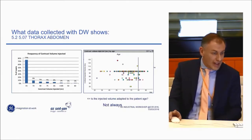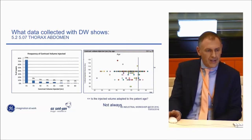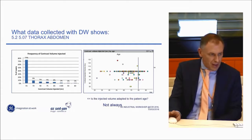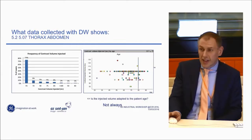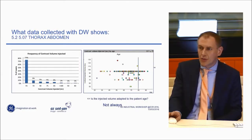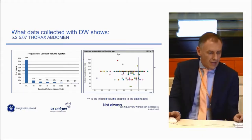Is the injected volume adapted to age? Definitely not always. Looking at the age line at 80 years, above that threshold we see that some patients receive 75 or 70 ml of contrast, but a lot of them — if not most — are still injected the house rule of 95 ml. So here we have a lot of work to do yet.